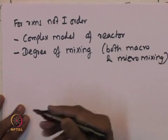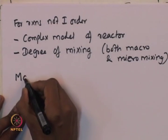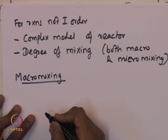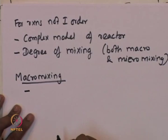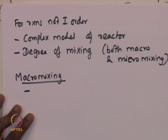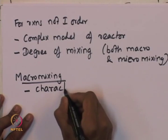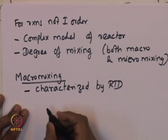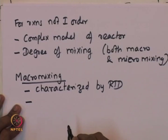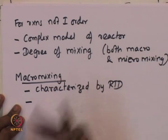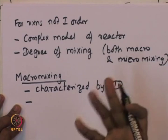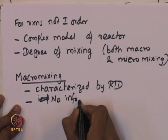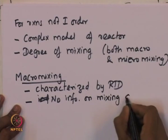These terms macro and micro mixing will be defined now. There are two levels of mixing: macro mixing and micro mixing. Macro mixing is the extent of mixing characterized by the RTD function itself — it is characterized by the residence time distribution function. An important aspect of macro mixing is that there is no information on mixing at the molecular scale when the fluid is in a macro mixing state.